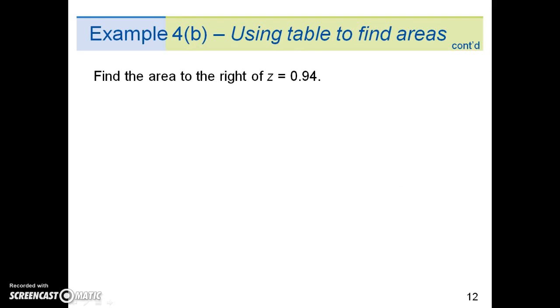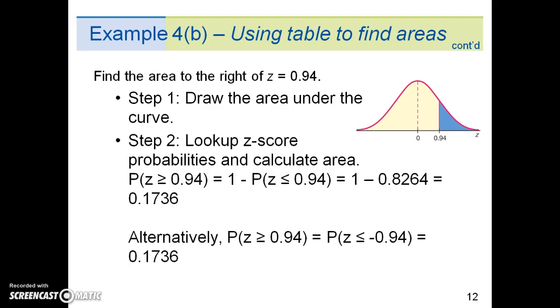Another example for 4b: find the area to the right of z = 0.94. First, we draw the area under the curve, so the area that we're looking for. Second, we look up the z-score probabilities and calculate the area. In this example, because we're looking for the area to the right, whatever the probability is, we're going to subtract from 1. So we get an answer of 0.1736.